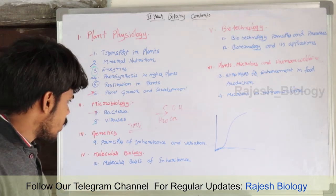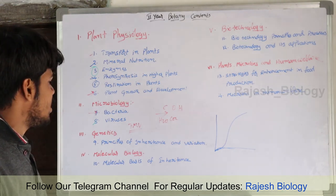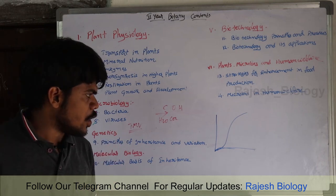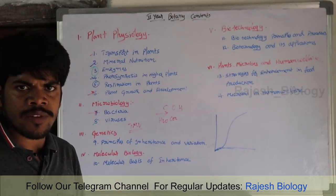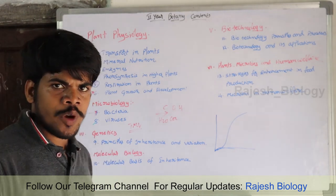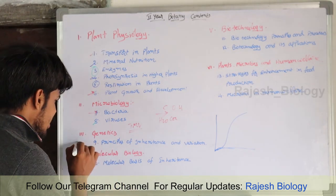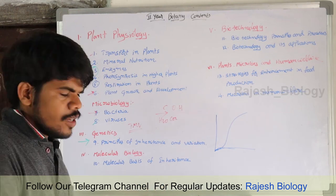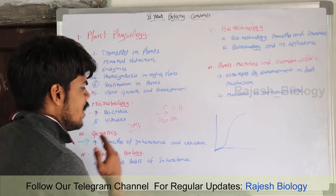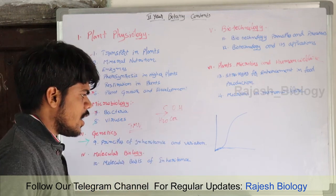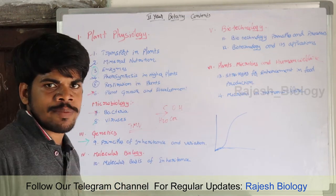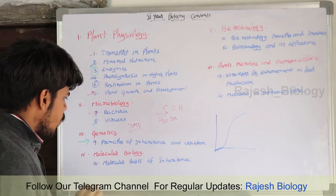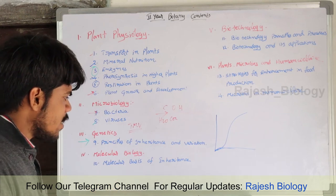Next we go to genetics — very very important and interesting, my favorite subject. Principles of inheritance and variation are the basic concepts of genetics. After this video, I am going to teach genetics first because it is the basic concept for zoology also — it is helpful and somewhat related to zoology. Principles of inheritance and variation covers Mendel's concepts: the law of segregation and the law of independent assortment. Next is molecular biology — molecular basis of inheritance.